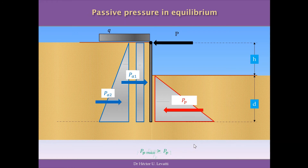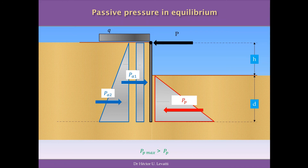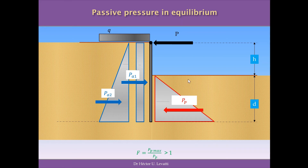Once we have worked out all the forces — the passive pressure in equilibrium and the maximum passive pressure we can develop in our soil — the question is to define a safety factor. In the first place, we need the maximum passive pressure to be greater than the passive pressure in equilibrium, in order to be in good conditions. If we have more passive pressure than we need, we will have a safety factor greater than 1. The value of this safety factor will be defined depending on the case and can vary between 2 and 5, depending on the function of the area that the wall is protecting.